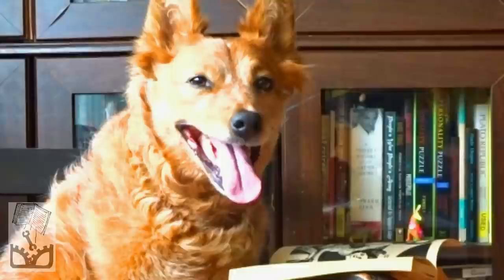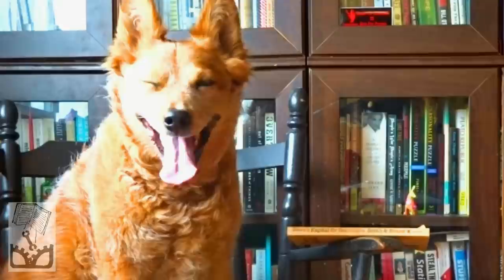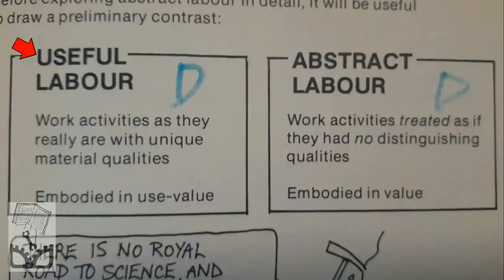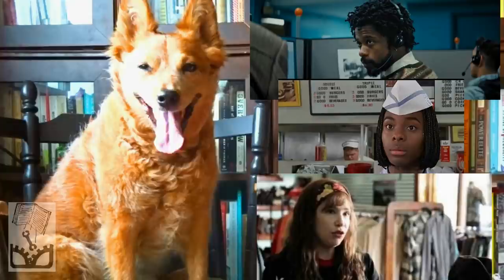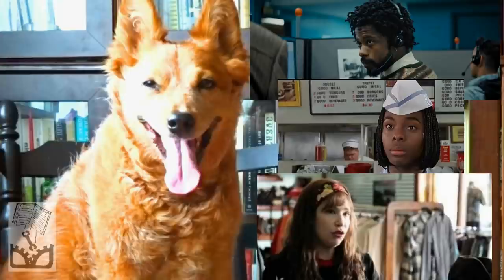Chapter 6: Abstract Labor. Smith and Evans start with some definitions. Useful labor is work activities as they really are, with unique material qualities, embodied in use value. Abstract labor is work activities treated as if they had no distinguishing qualities, embodied in value. For example, a minimum wage worker at a call center, a fast food restaurant, or a clothing store might do vastly different things, but the value of their work — their abstract labor — is all the same. It's all minimum wage.